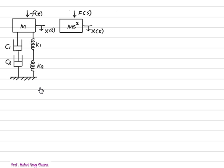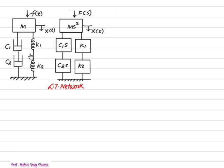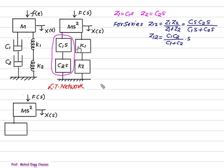Whenever we have used such type of system, we use the impedance Laplace network. So, impedance of M is M square, impedance of F of T is F of S, and impedance of X of T is X of S. The impedance of C1 is C1s, impedance of C2 will be C2, and impedance of K1 is K1 and impedance of K2 is K2. Now, consider this series arrangement, which has a Z1 equal to C1s, Z2 equal to C2s. This is series.